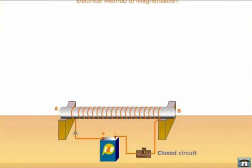When the circuit is closed, a strong direct current passes through the coil of the insulated copper wire and the bar becomes a magnet. The polarity of the rod depends upon the direction of the current.